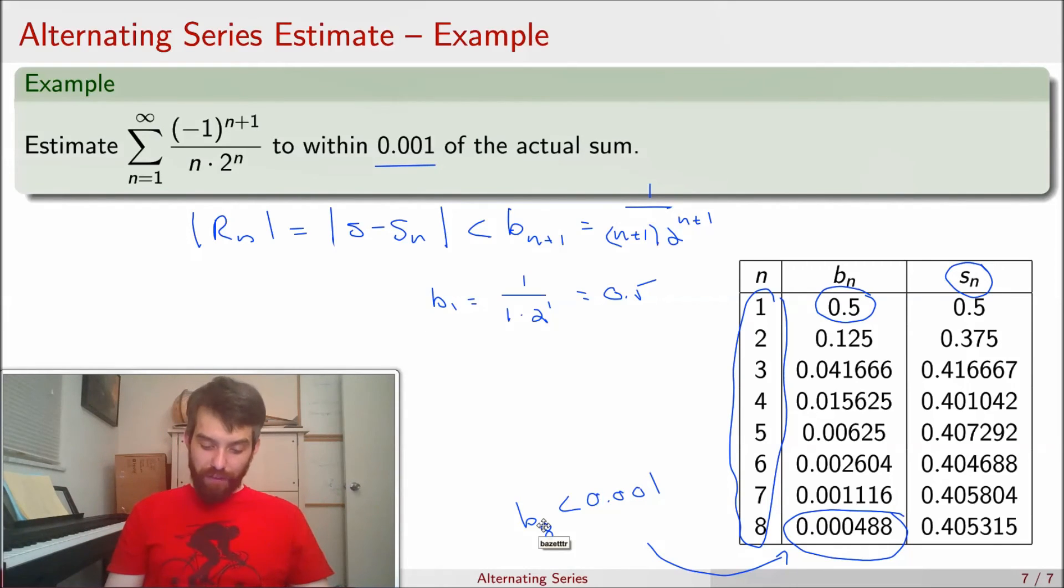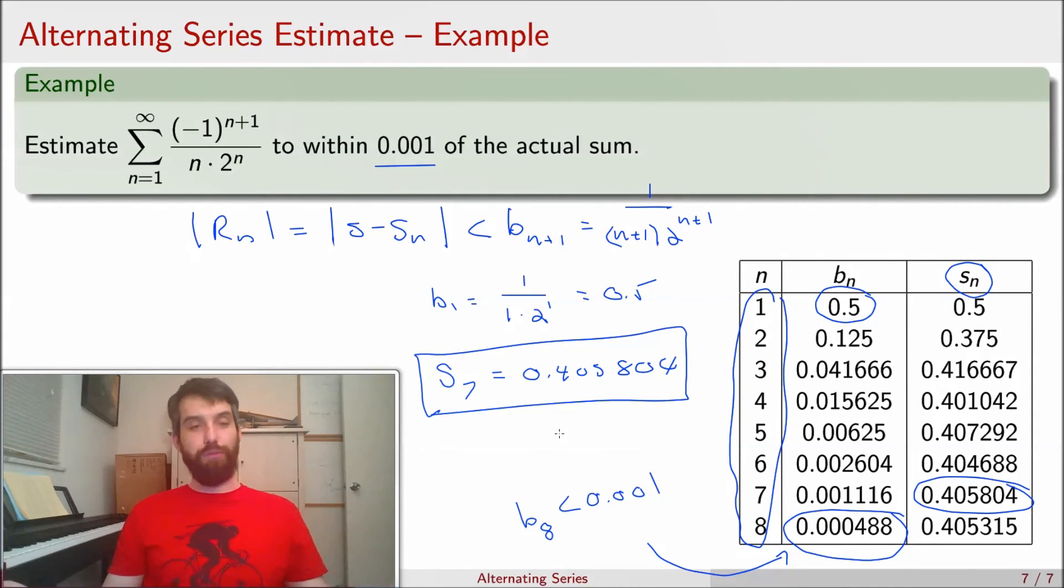So when I want to figure out what my Sn is, s7 is what I really want to be interested in. And that's this value over here, the 0.405804. And so I am going to approximate this sum by the computation for s7, the 0.405804. And I know that that value, while it may not be exactly the answer for the sum, it is within 0.01 of the sum.